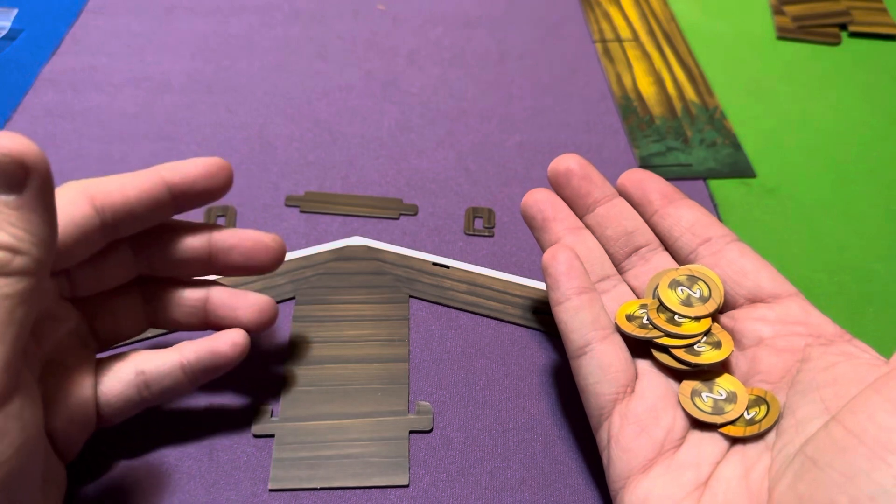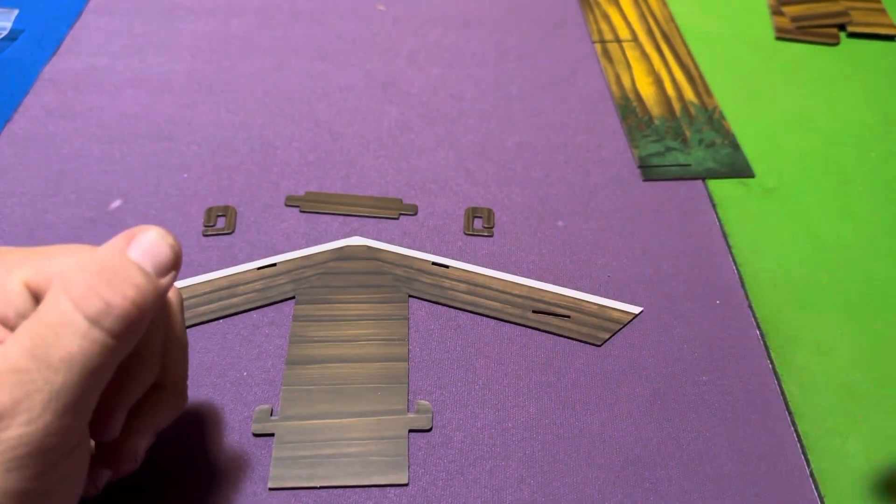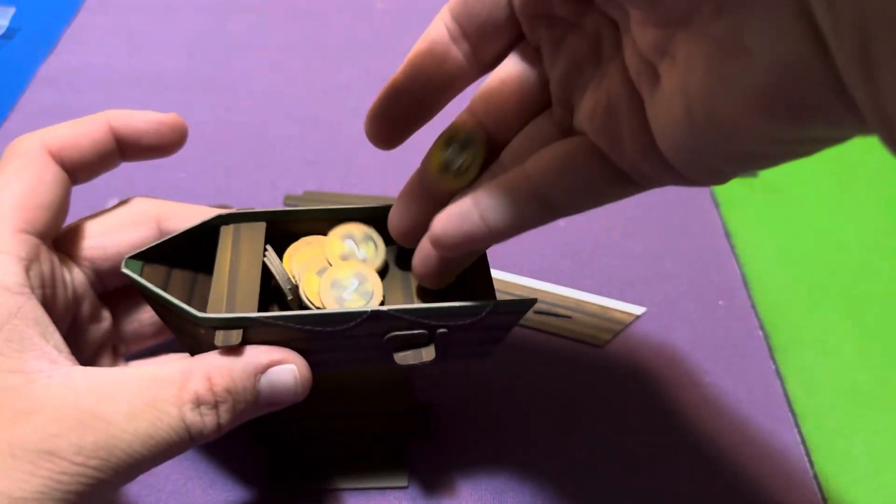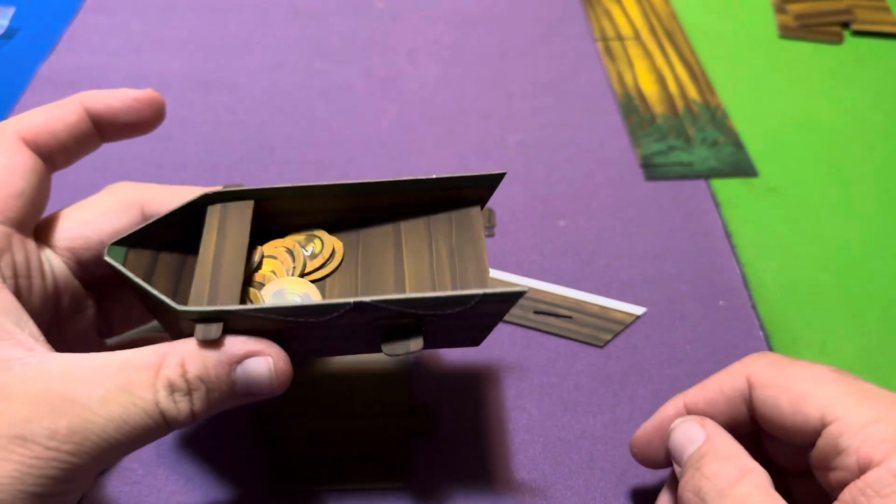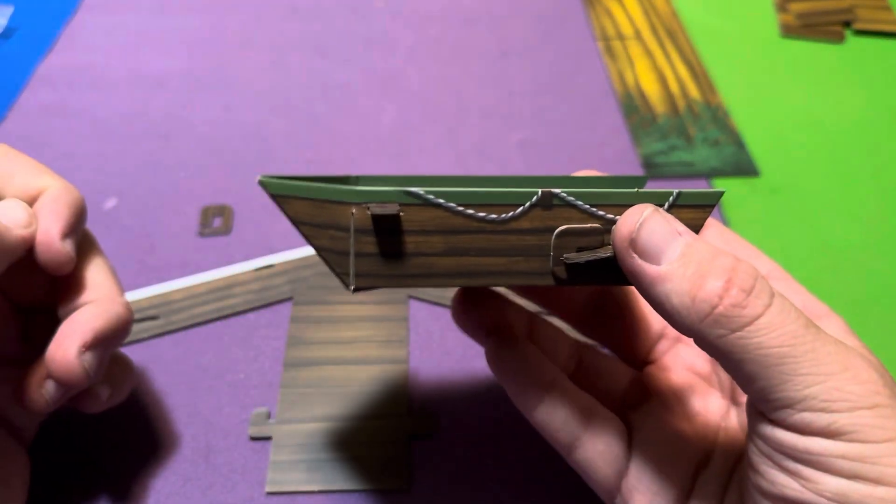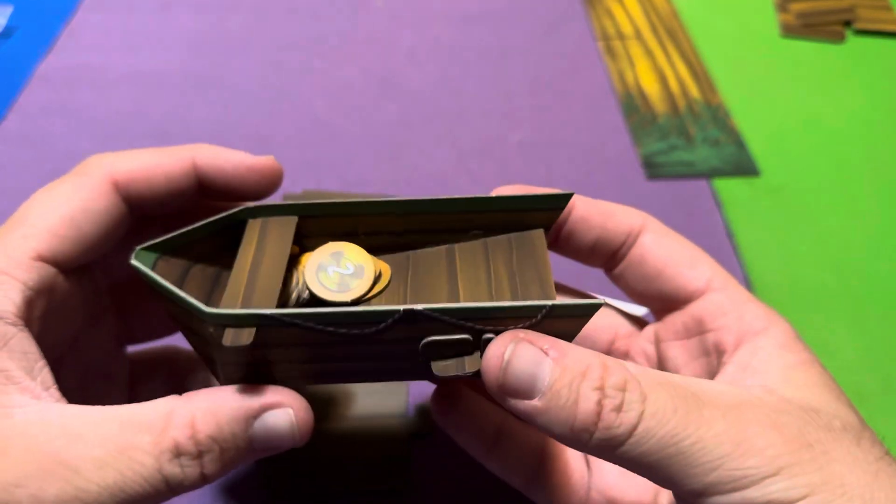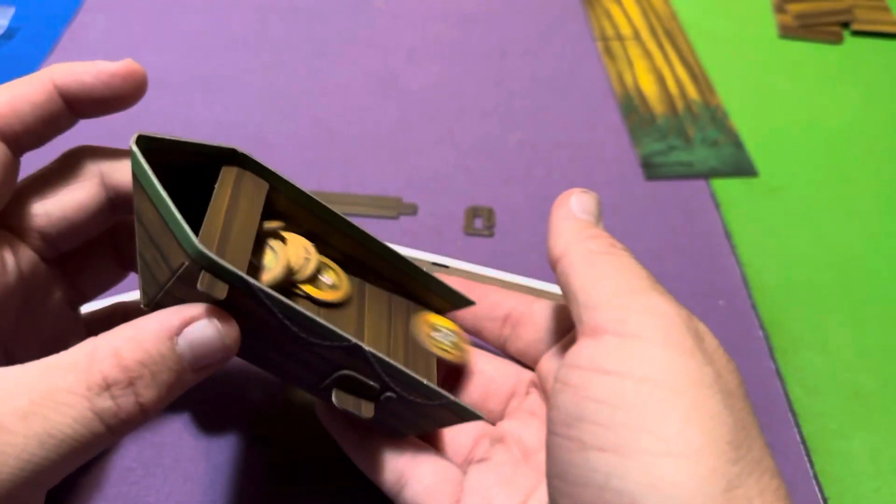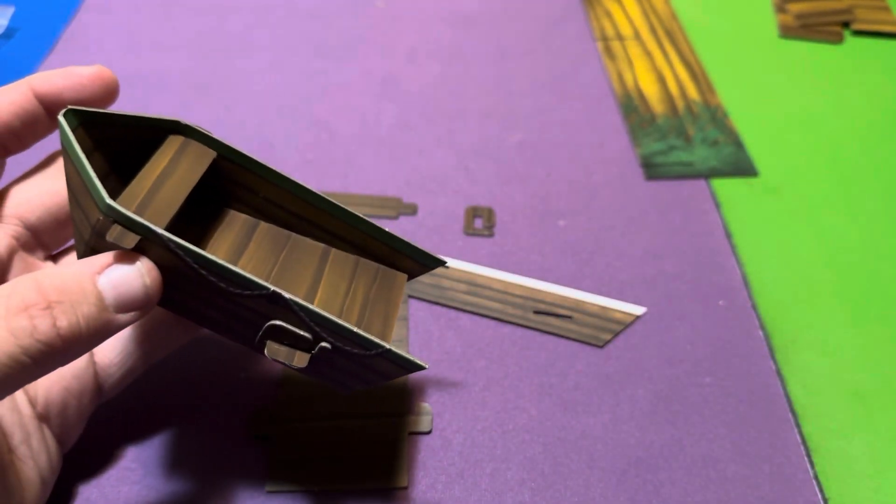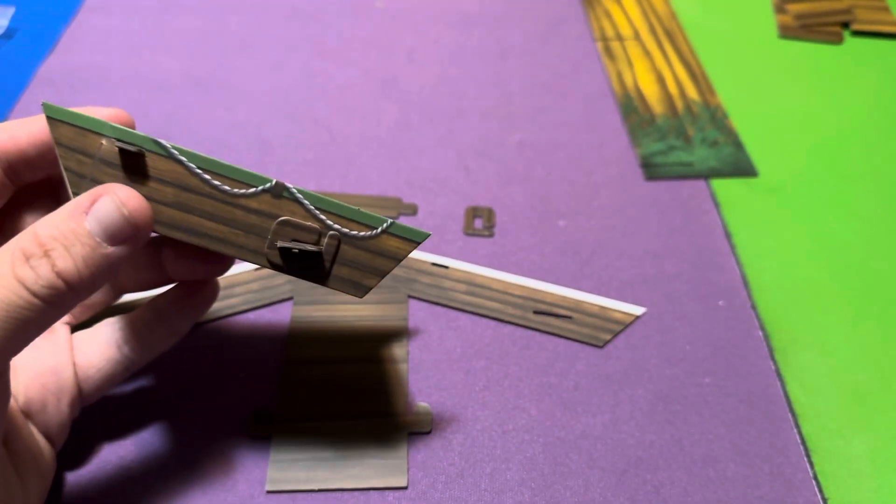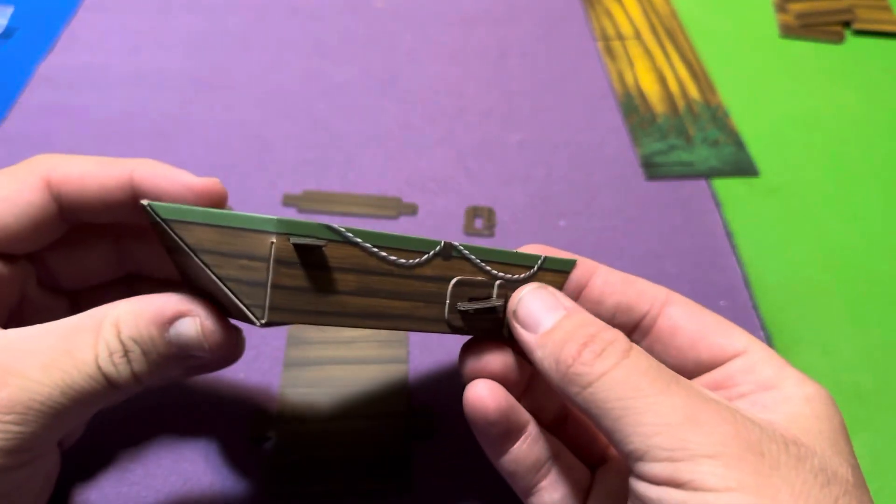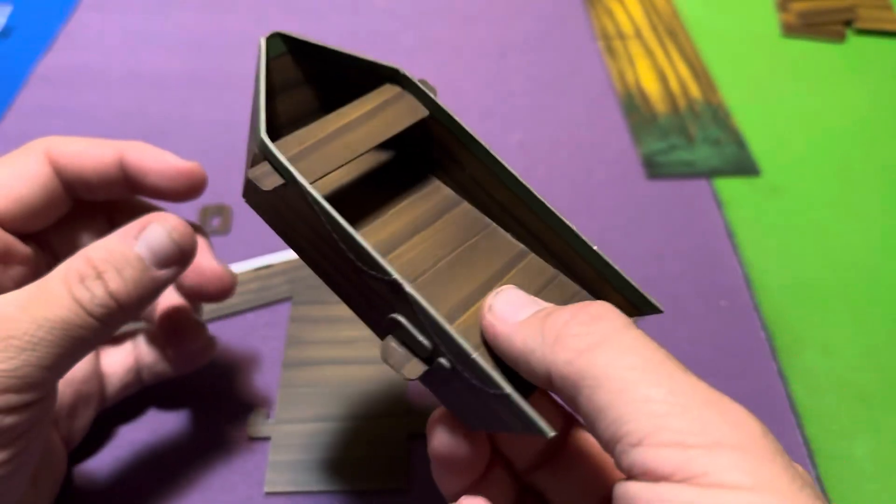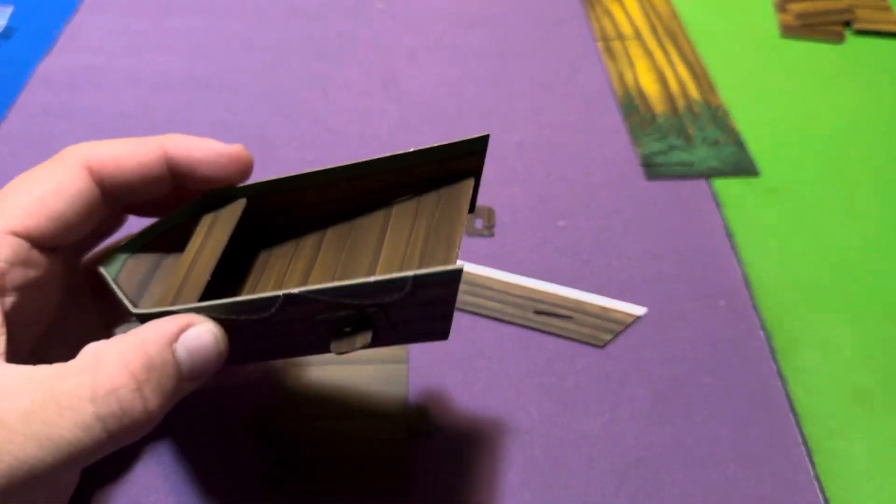But instead of going into a regular just discard pile on the table, they're going to go into a discard boat, like so, which is cool, really cool, right? So I already have assembled three of the four boats. They come in the four player colors, so we have, for instance, the green one for the green player already set up. And as you can see, it's a beautiful component and put together quite well.